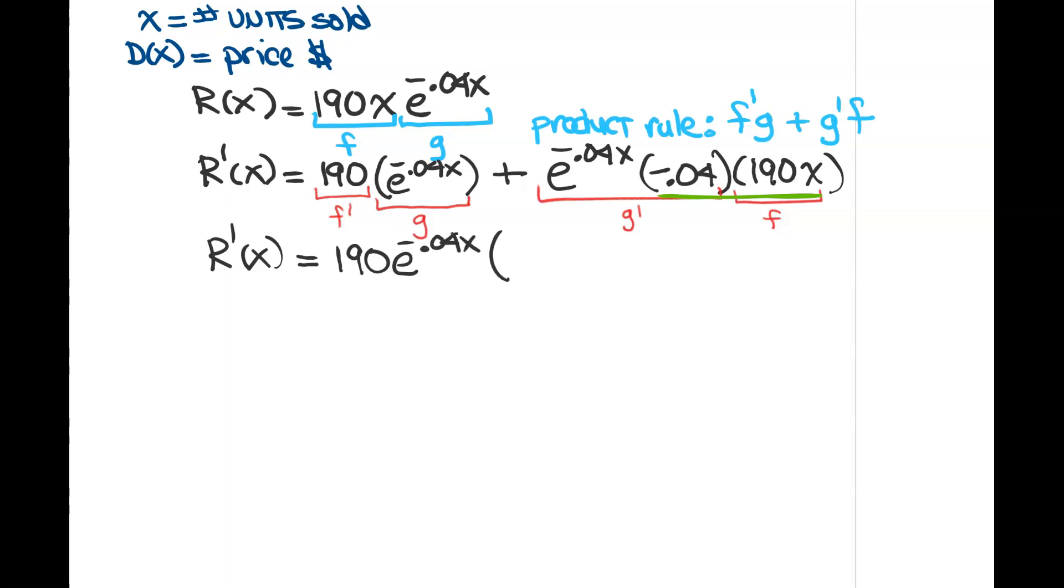If I factor that out from the first term, that just leaves me a 1, plus, and from the second term, when you take out the 190 and the e, you're just left with this -0.04 and an x. You could check if you distribute this back, you'll get the terms up above. So we've got this thing factored.